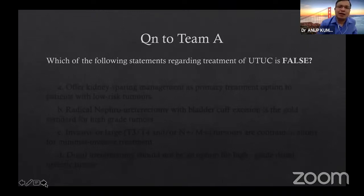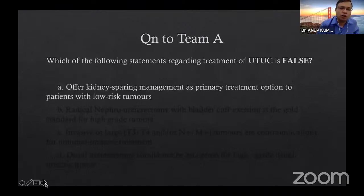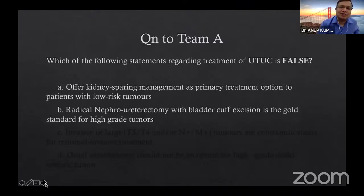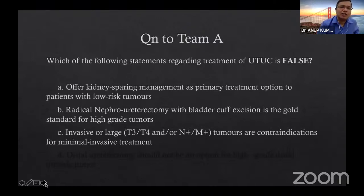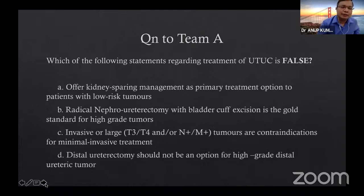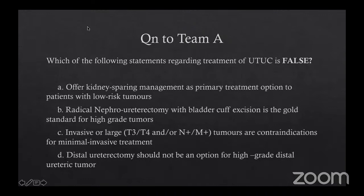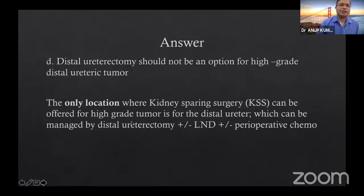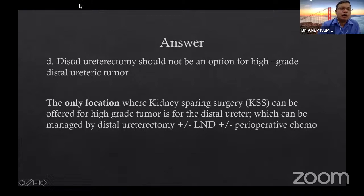Question 13 to Team A: Which statement regarding treatment of upper tract urothelial carcinoma is FALSE? Options: offer kidney-sparing surgery for low-risk tumors; RNU with bladder cuff excision is gold standard for high-grade tumors; T3/T4, lymph node positive or metastatic tumors contraindicate minimally invasive treatment; distal ureterectomy should NOT be an option for high-grade distal ureteric tumor. Dr. Vinod correctly answers D — this is false — because for high-risk distal ureteric tumors, distal ureterectomy is still a valid option, provided lymph node dissection and perioperative chemotherapy are also performed.